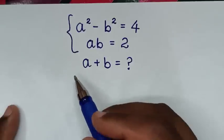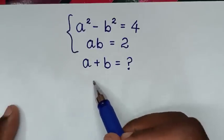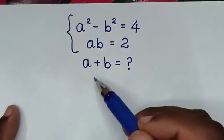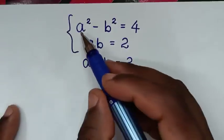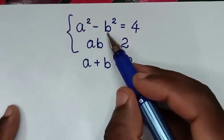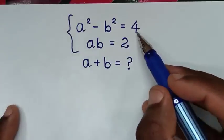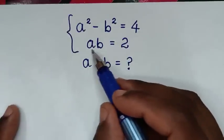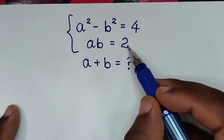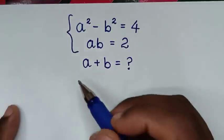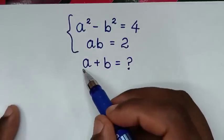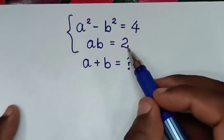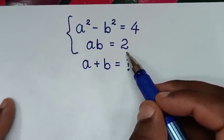Hello, you are welcome to solve this math problem: a squared minus b squared is equal to 4, and ab is equal to 2. We need to find the values of a plus b from these two systems of equations.